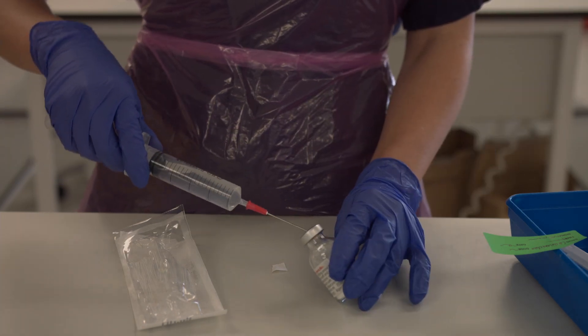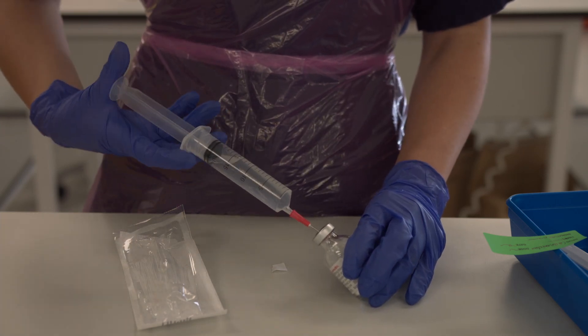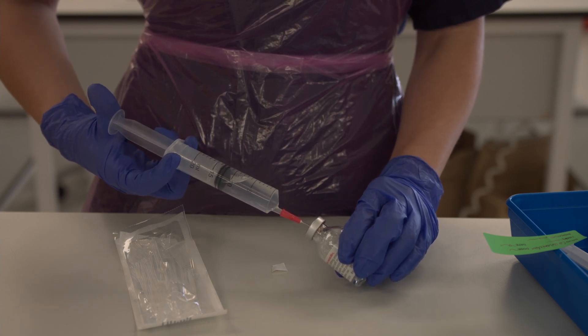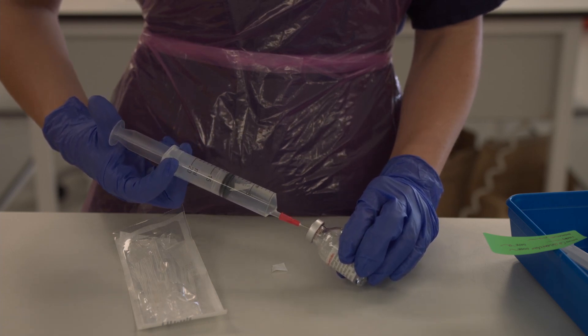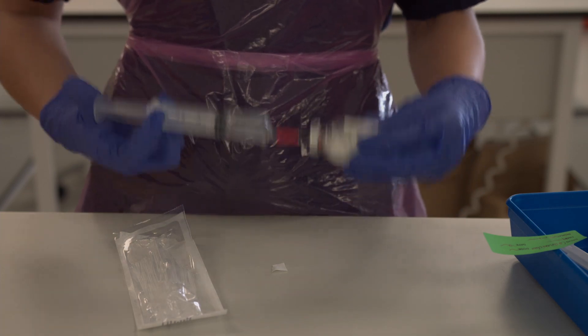You then pass the needle through the rubber part of the bottle and inject the first 10ml of the solution into the powder. You then need to shake the bottle to dissolve.